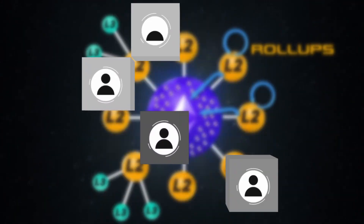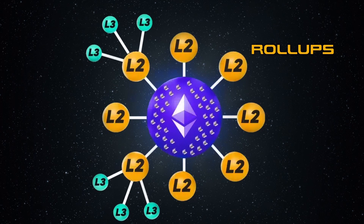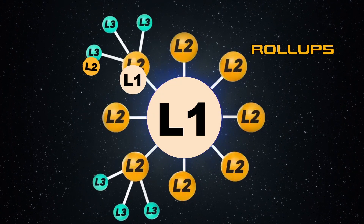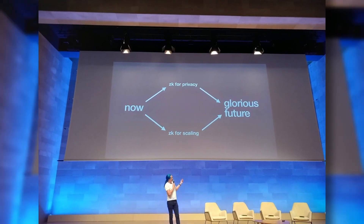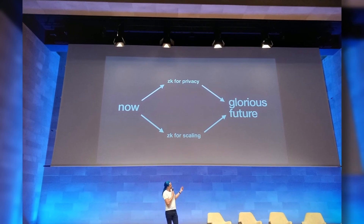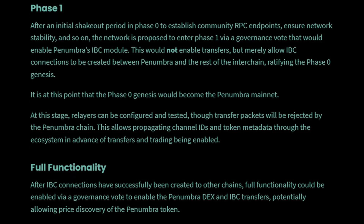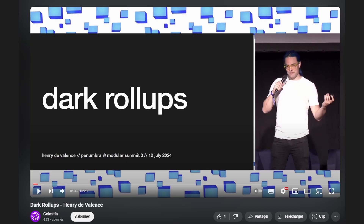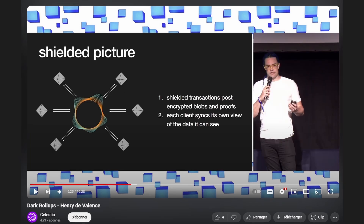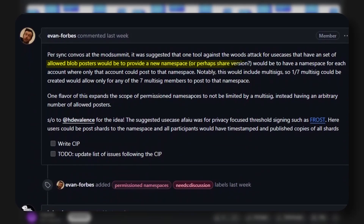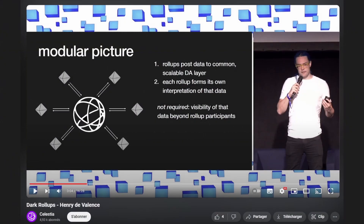Penumbra doesn't fit into a specific category — don't talk to them about Layer 1 and Layer 2. At this stage, we are all someone's L1 and someone else's L2. The founders had an architecture in mind that allows for private use cases still unavailable, and they themselves don't yet know how Penumbra will be used. While private transfers and exchanges will be available at launch, discussions about dark rollups on top of Penumbra are just beginning. Penumbra could become a private settlement layer where different dark rollups deposit their data.